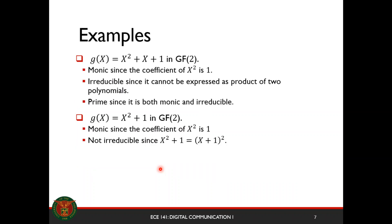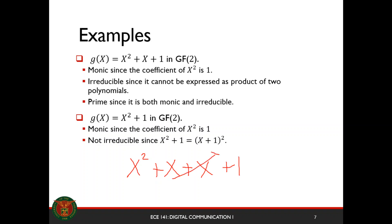Let's have an example. Let's say g(x) is x squared plus x plus 1 in GF(2). This is monic since the coefficient of x squared is 1. It's irreducible since we cannot express it as a product of two polynomials. And it's prime because it's both monic and irreducible. Now, x squared plus 1 is monic, but it's not irreducible since x squared plus 1 equals (x plus 1) squared. Because x squared plus x plus x plus 1, and x plus x equals 0, leaving x squared plus 1. So x squared plus 1 in GF(2) is not irreducible.